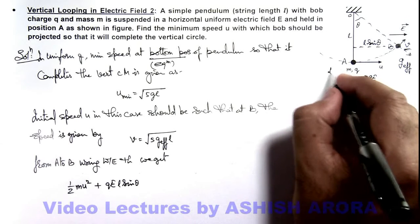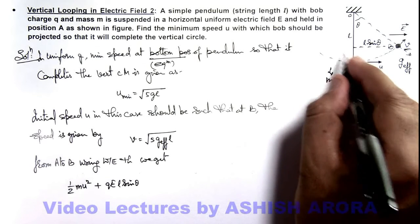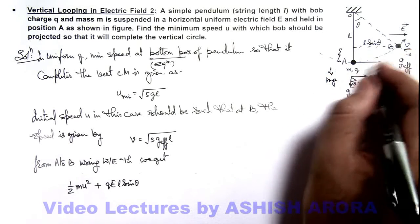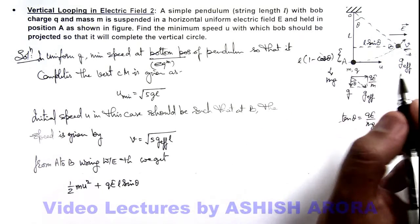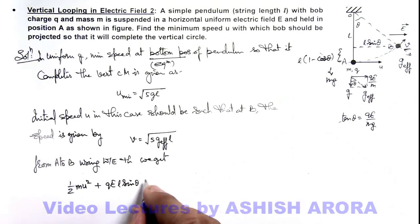And against mg it is going in opposite direction and this height to which it is raised from A to B is l times 1 minus cos theta. So it can be given as.